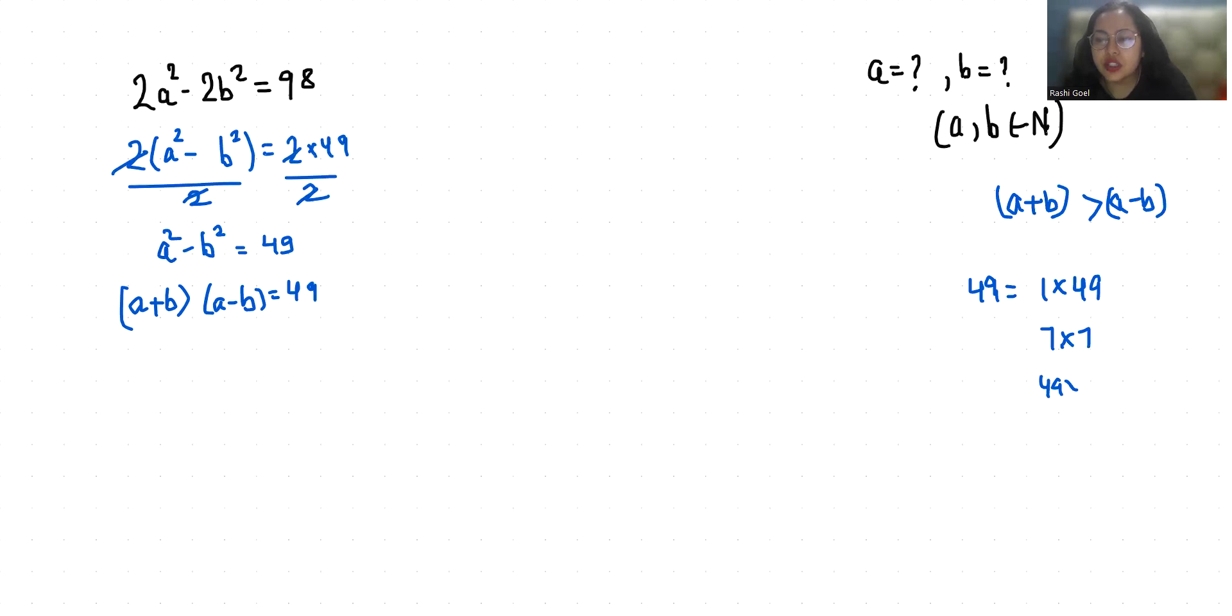So if this is a+b and this is a-b, the 1×49 case cannot be taken because here a+b is smaller than a-b. The 7×7 case we can take, and 49×1 we can take because a+b is greater than a-b. So we are going to take these two cases.